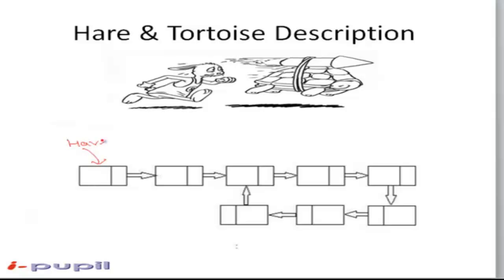The hare will move with the speed of two steps and the tortoise will move with the speed of one step. They will keep on running until they meet at some node in the linked list.